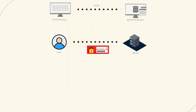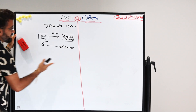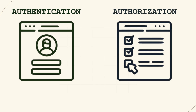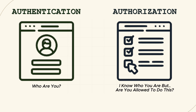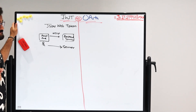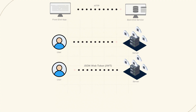The request will have the username and password — the user will enter the username and password, and the server will authenticate and authorize. What is the difference between authentication and authorization? Authentication in simple language means who are you, and authorization means: I know who you are, but are you allowed to do this? That is the difference between authorization and authentication.